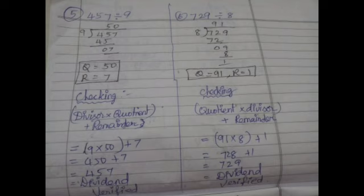One more sum for checking: 457 divided by 9. Here 9 is the divisor. The first digit 4 is smaller, so we take the 2-digit number 45. 9 fives are 45; 45 minus 45 is 0. Bring down 7 — since 7 is smaller than 9, we put 0 in the quotient. So the quotient is 50 and the remainder is 7. Checking: divisor 9 × quotient 50 + remainder 7 = 450 + 7 = 457, which equals our dividend. The sum is correct.